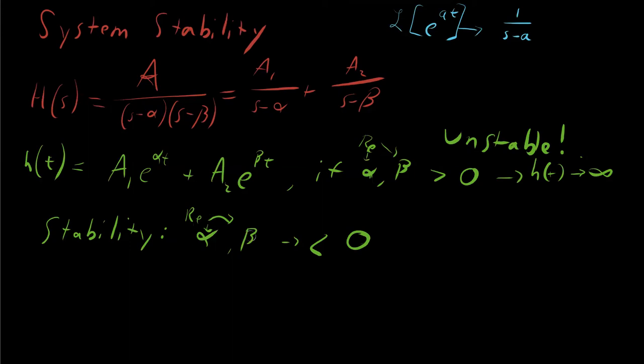But you can see that if these were negative, if alpha and beta, the real parts were negative, then this, for whatever inputs you give, are just going to decay to zero. And thus, if alpha and beta have real parts that are negative, then this entire system is stable.